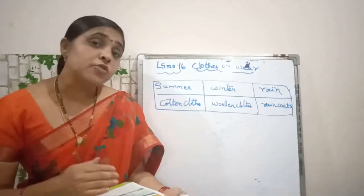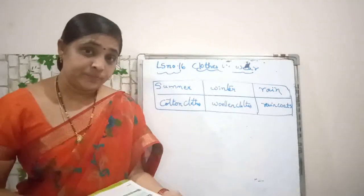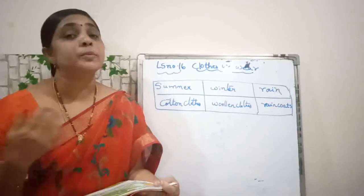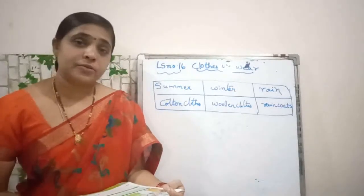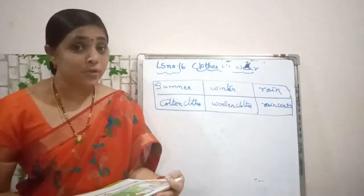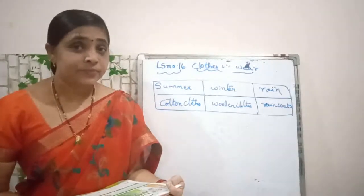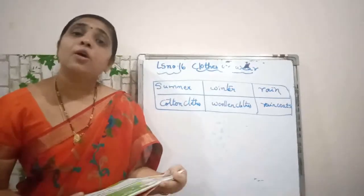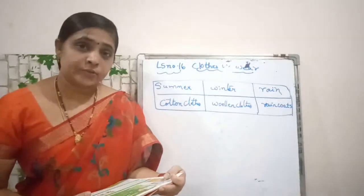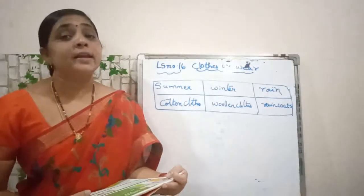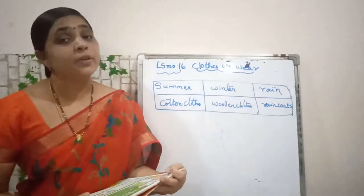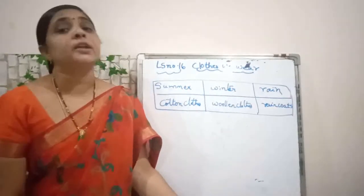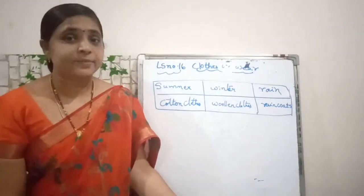What clothes will you wear in summer season? In summer season, you will be wearing cotton clothes. In winter season, you will be wearing woolen clothes. And in rainy season, you will be wearing a raincoat. Now all of you look at your textbook.